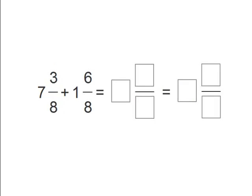Now we see 7 and 3 8ths plus 1 and 6 8ths. So let's first add the 7 and the 1. So 7 plus 1 is 8. And now let's add the 3 and the 6 together. So 3 plus 6 equals 9, and we keep the 8 the same.